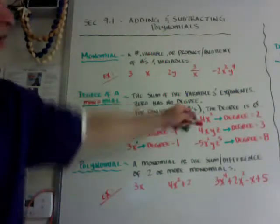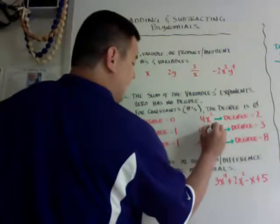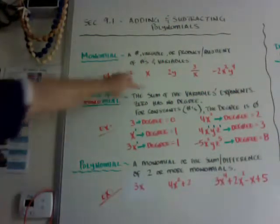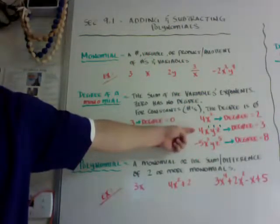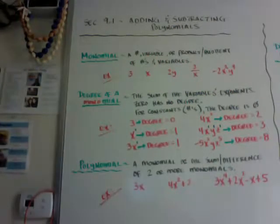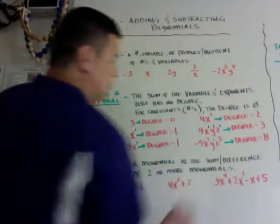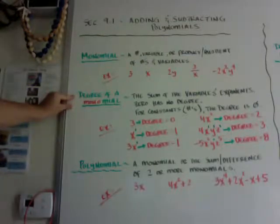In 4x squared, you can see the x squared, so the degree is 2. For the next one, you need to add up the degrees of the variables — remember, it's the sum. So it's 1 plus 1 plus 1, so your degree is 3. And this last one, your degree would be 8 because there's an invisible 1 here — so 2 plus 1 plus 5 is 8. That's how you find the degree of a monomial.